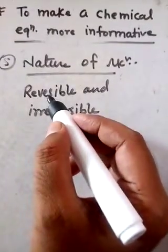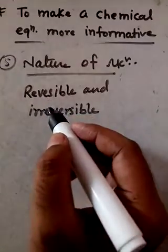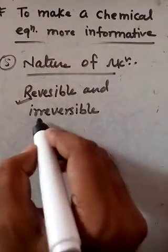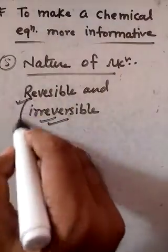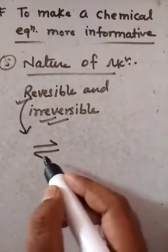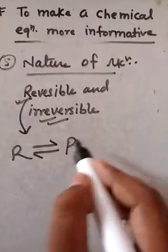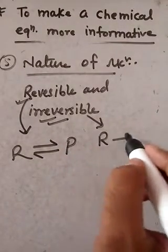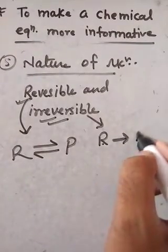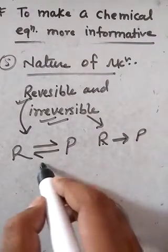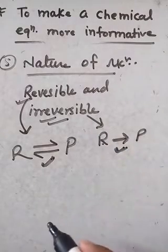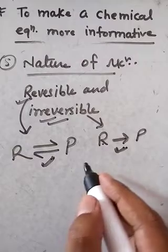The fifth point is the nature of reaction. There are two types: reversible and irreversible. For a reversible reaction, we use a double half-arrow sign (⇌) between reactants and products. For an irreversible reaction, we use a single straight arrow (→) between reactants and products.